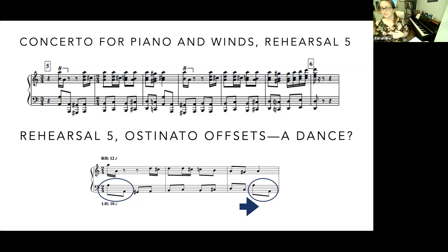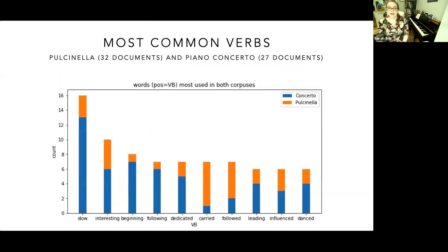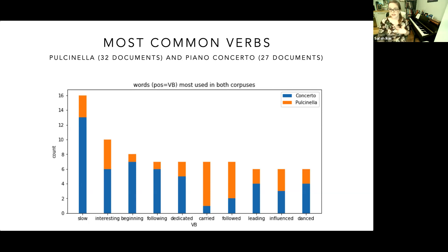That stopped before I meant for it to, but it continues in this way with this sort of offset, moving into something even more march-like in character. That's an interesting adjective we want to explore more in the future with the word windows feature. Returning to the most common verbs list, the last thing I want to point out is the number of verbs associated with some kind of relationship — we see references to leading, following, and influence — all words indicating we're thinking about a relationship between things.